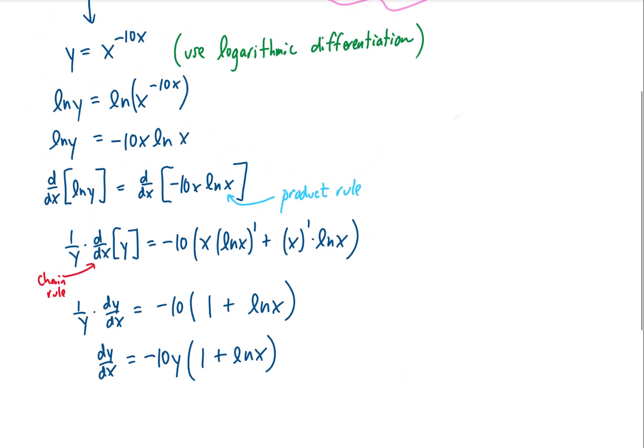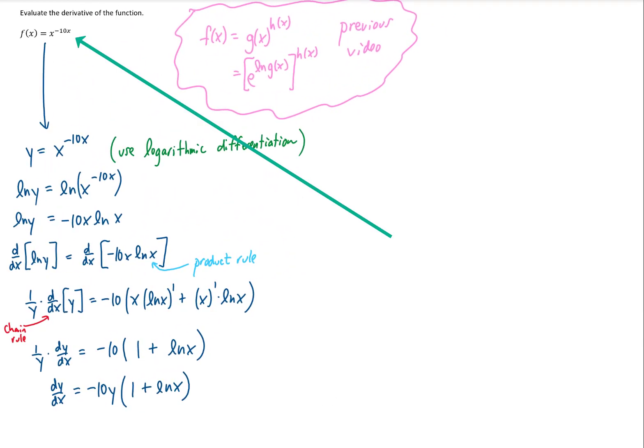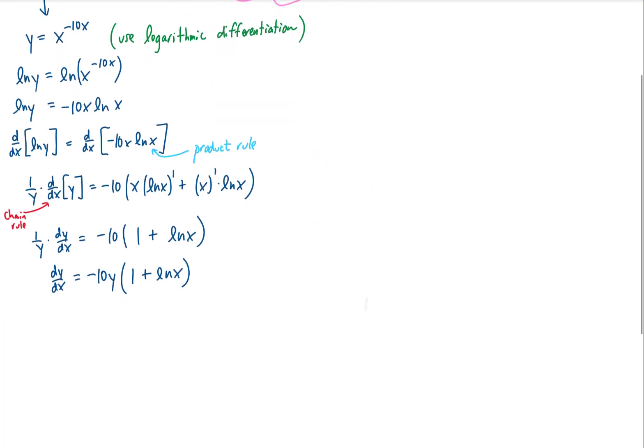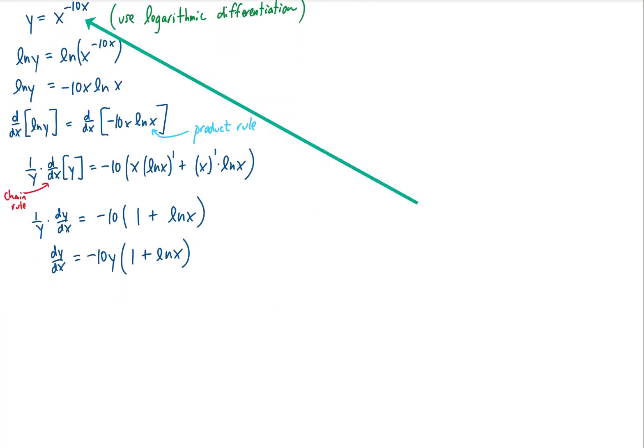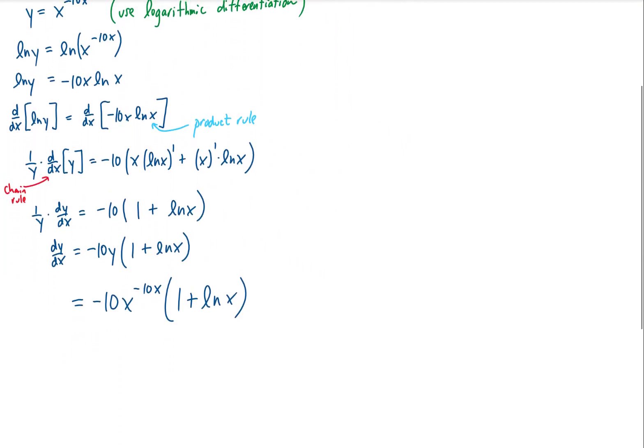Of course, in our original problem we were given just a function of x and asked to find its derivative, so that result should just have x's in it. What we're going to do is take this y, which is x to the power of negative 10x, and plug that in right here. Using the notation from the first part of the problem, I'm going to call that f'(x). That is the final answer for this derivative.